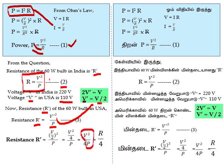Since V²/P = R from equation 2, we get V²/(4P) = R/4. So the resistance of the 60-watt bulb in USA is R/4. The correct answer for the given question is option C: R/4.